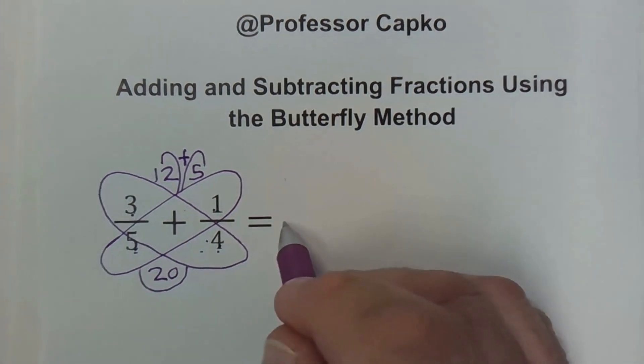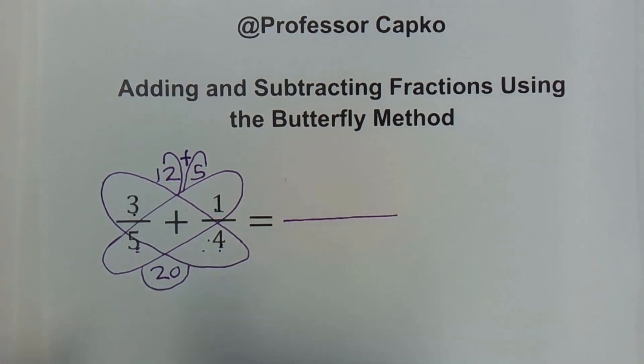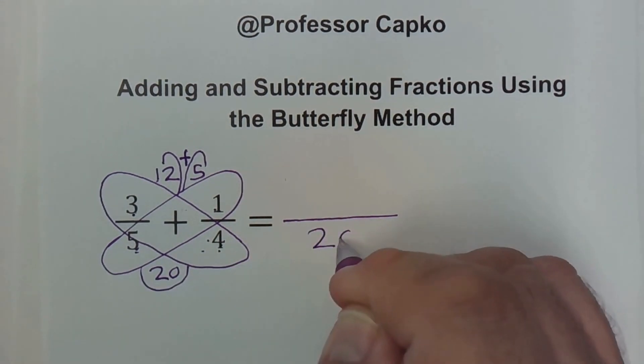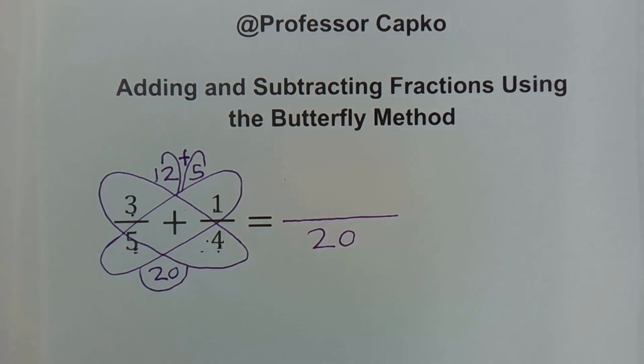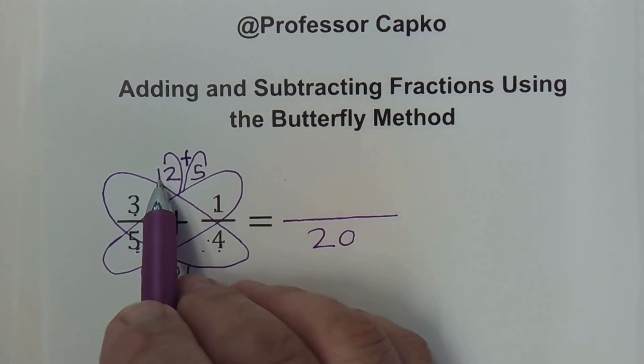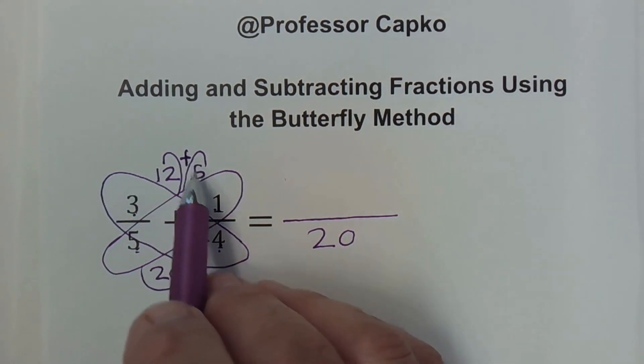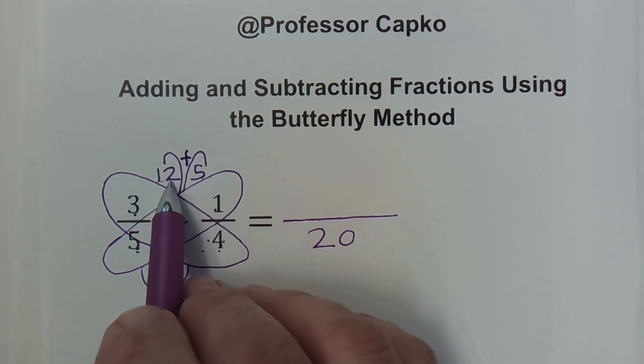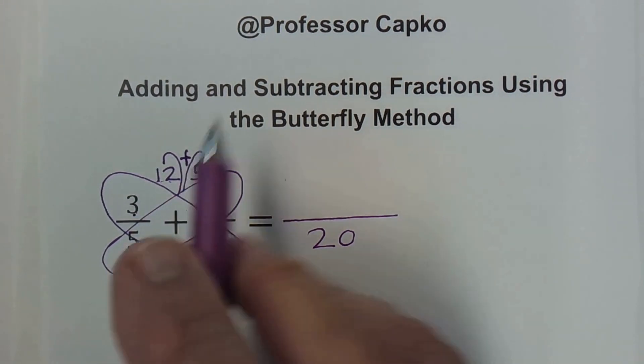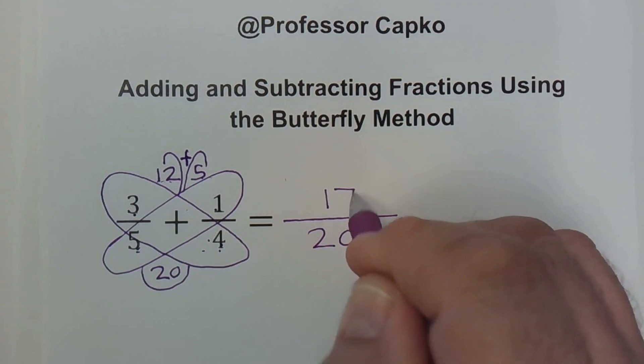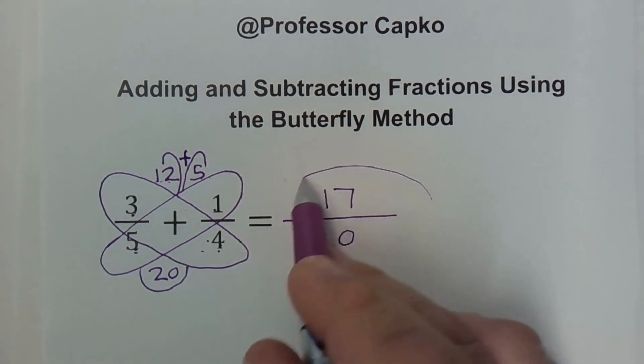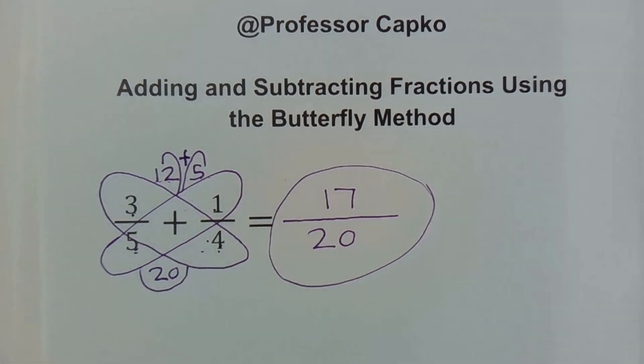Now all I need to do is put everything together. I draw my line for my answer fraction. Whatever is in the body here I put that as my denominator, so that goes right there. Then I've got 12 plus 5. I add these numbers together. 12 plus 5 is 17. So the answer to this is 17 twentieths. It's as simple as that.